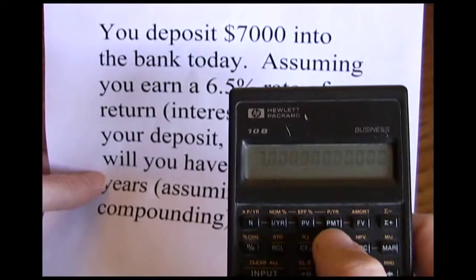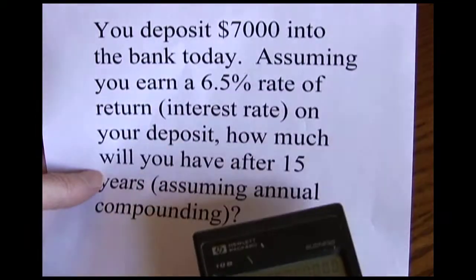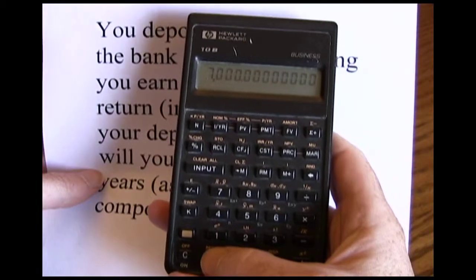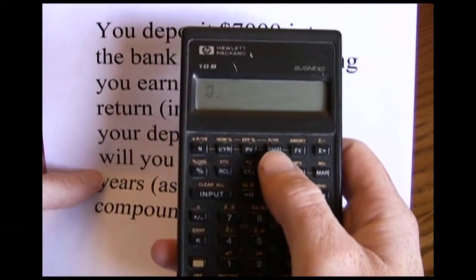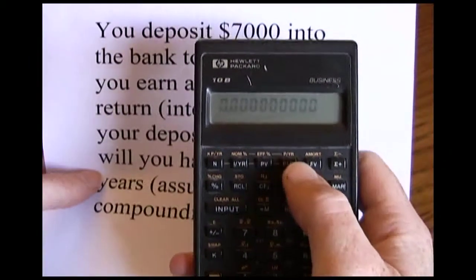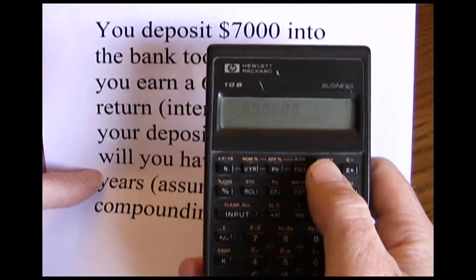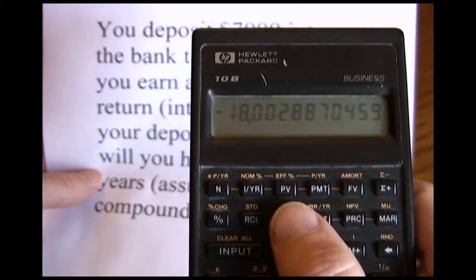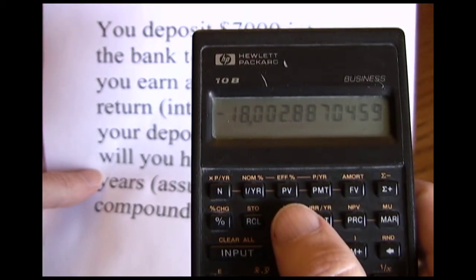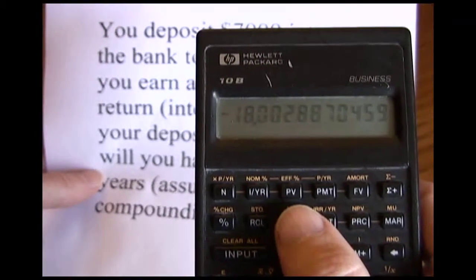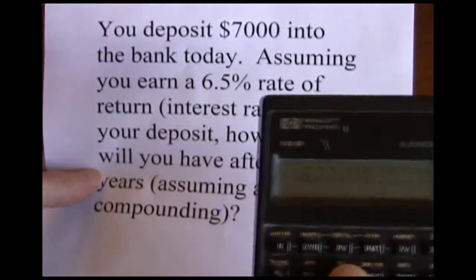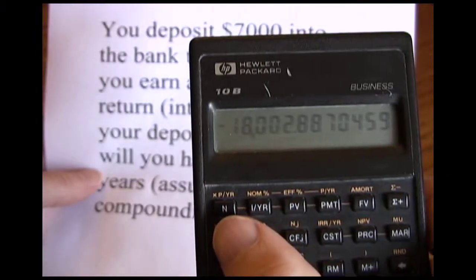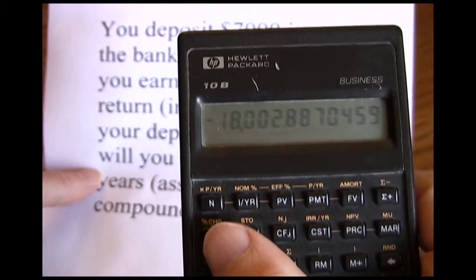Next key is payment. We don't have an annuity in this one, so we want to zero out the payment to tell the calculator we're not using that. So zero PMT, and now solve for future value. You can see that we're going to have $18,002.89 in the bank after our 15 years is up. Ignore that negative sign for right now — I'll talk about that in a little bit.